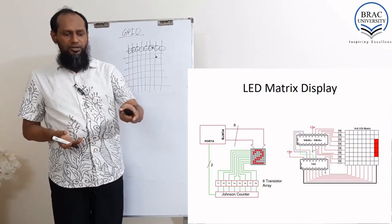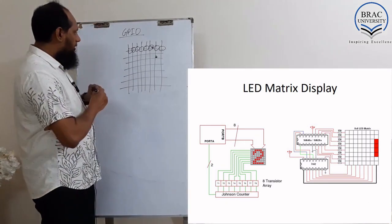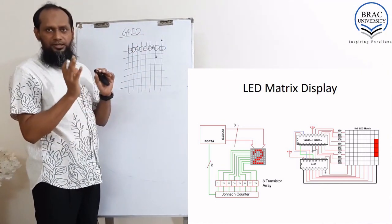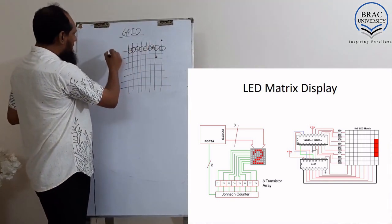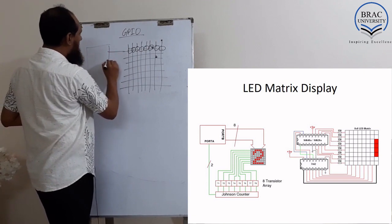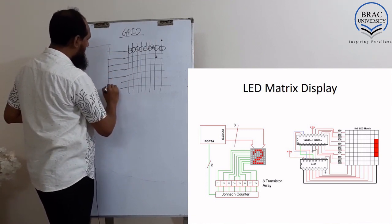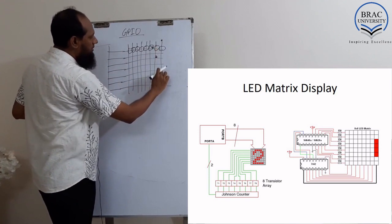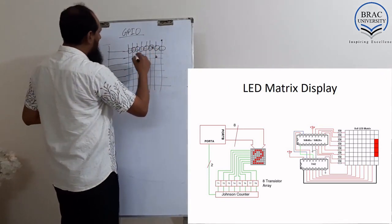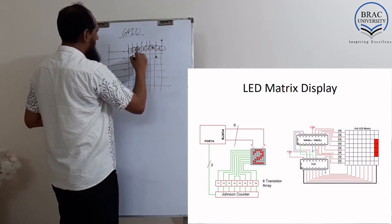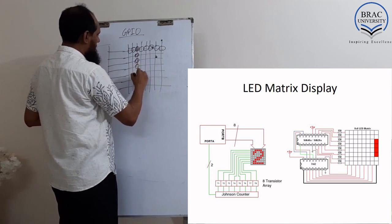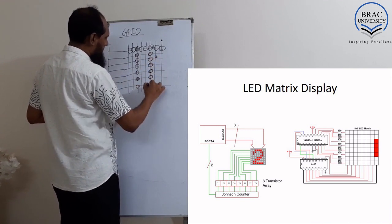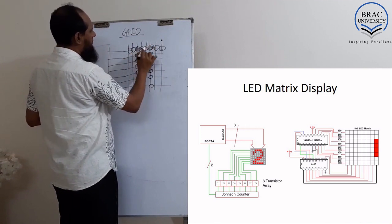What happens inside? You can see in this slide. It will select a line, and the microprocessing unit will provide the signal indicating which LEDs need to glow. For example, if we want to display the letter A, we want to glow this one, this one, this one, this one.